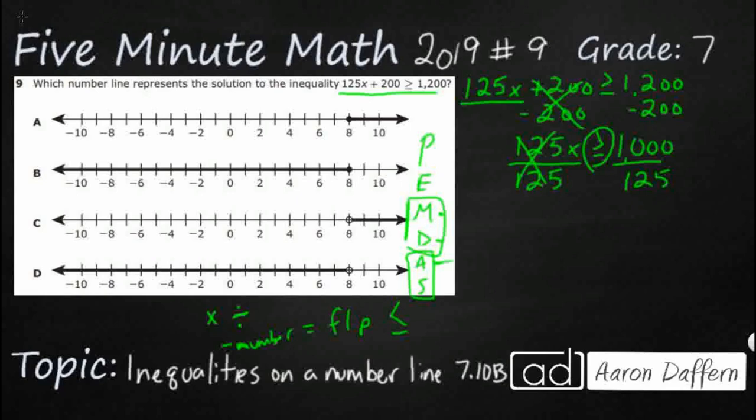So 125 divided by 125 is nothing. There's my x right there. It's 1x, but we don't really need to show the 1. So I just need to divide 125 into 1000.